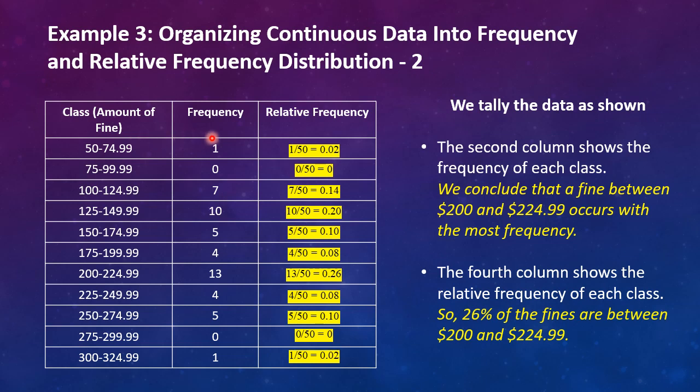So we tally the data. We count each occurrence that occurs within each range. We tally that and then build the table. This second column shows the frequency of each class. And we can see from the frequency that a fine between 200 and 224 dollars and 99 cents occurs with the most frequency. We calculate all the relative frequencies and we can see that that dollar amount represents 26% of the fines in this sample.